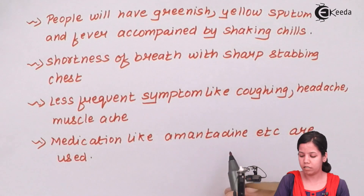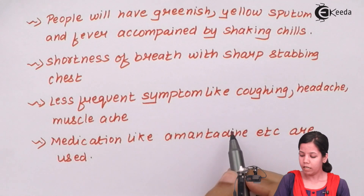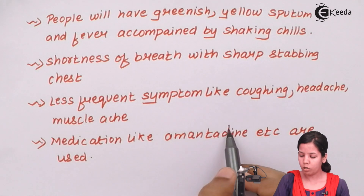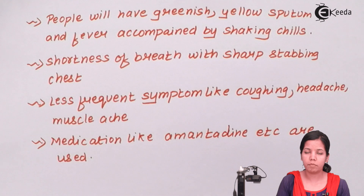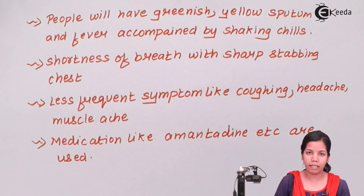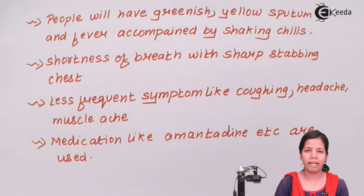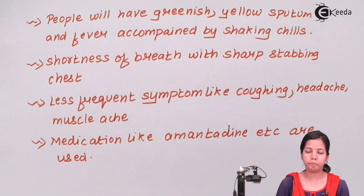Pneumonia can be treated with certain medications and certain preventative medicines. Pneumonia is not at all a fatal disease in adult individuals, but in younger children, if not taken care of properly at a particular time, it could prove fatal — leading to severe shortness of breath and eventually death due to congestion.